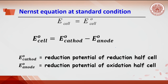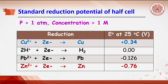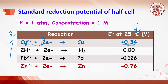E°_cell can be calculated from the standard reduction potentials of the two half cells using the equation: E°_cell equals E_cathode minus E_anode, where E_cathode is the reduction potential of the reduction half cell and E_anode is the reduction potential of the oxidation half cell. The standard reduction potential is the value of EMF of the reduction half cell, and indicates the tendency for gaining electrons. The reduction potential of copper ion is the highest, meaning copper ion prefers to gain electrons — it is a strong oxidizing agent. On the other hand, zinc prefers to lose electrons, so it is a strong reducing agent.